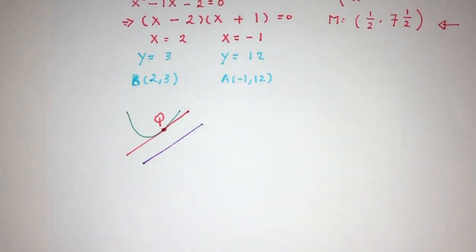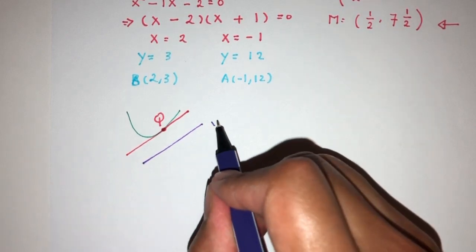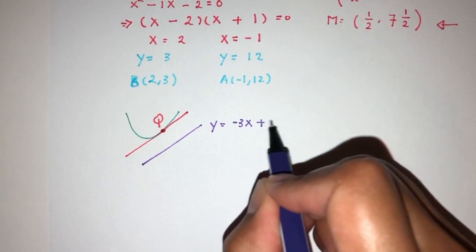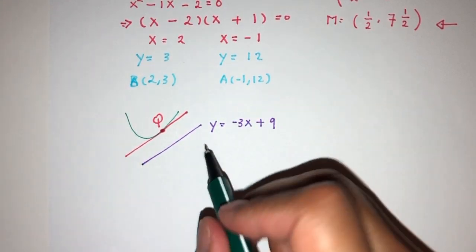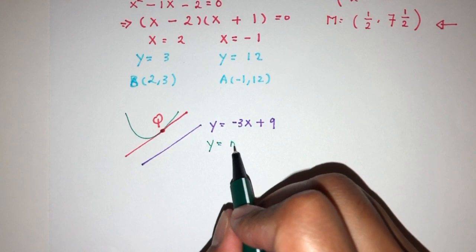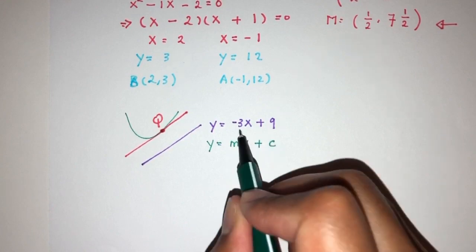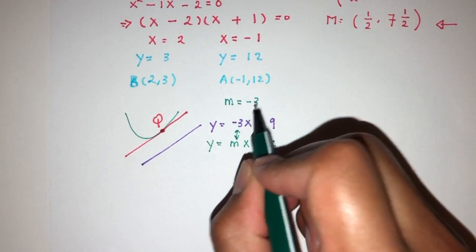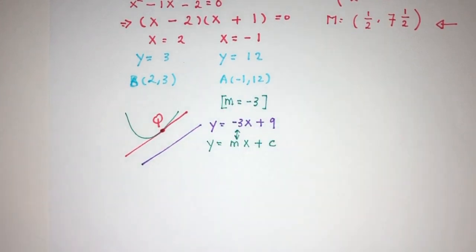What does it mean when two lines are in the same direction? It means that they are parallel and have the same gradient. Now this line is y = -3x + 9. By comparison with y = mx + c, we realize that m is equal to -3. So the gradient has to be -3.